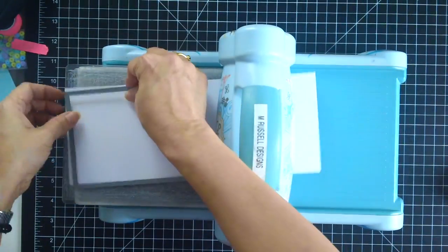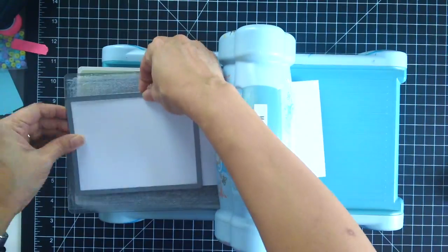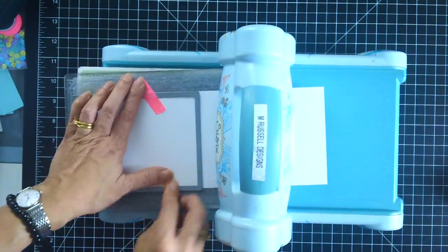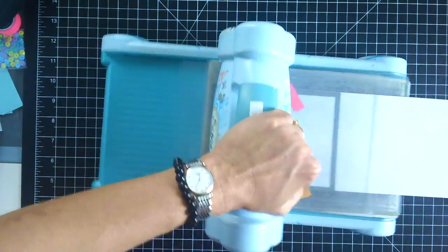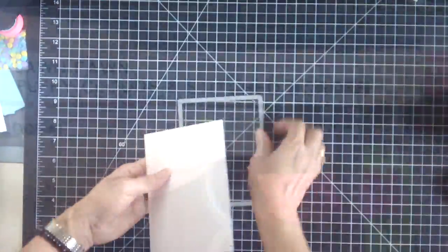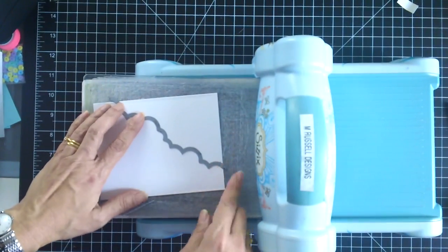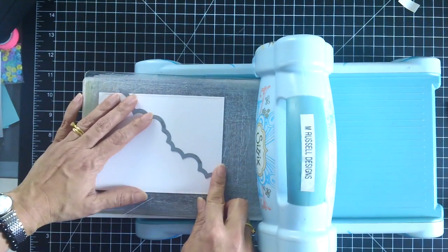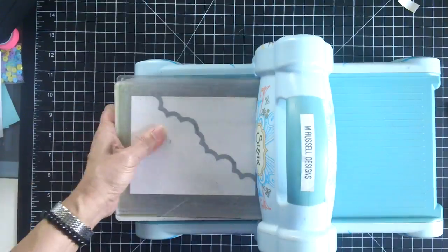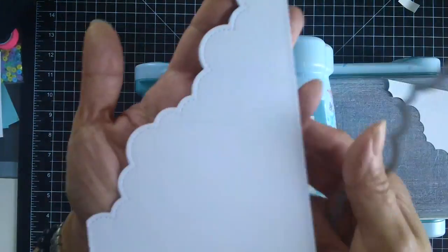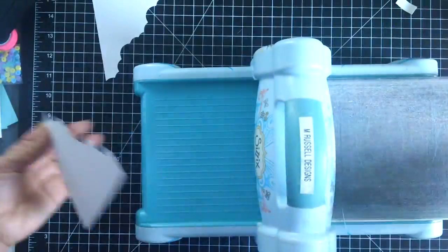Now I'm going to use my Lawn Fawn stitch rectangle die and I'm going to use my post-it tape here to just keep them in place. And then I am going to create the card front using the stitch clouds die by Lawn Fawn, and then I'm going to create the little windows for the cats using the stitched circle dies also by Lawn Fawn.